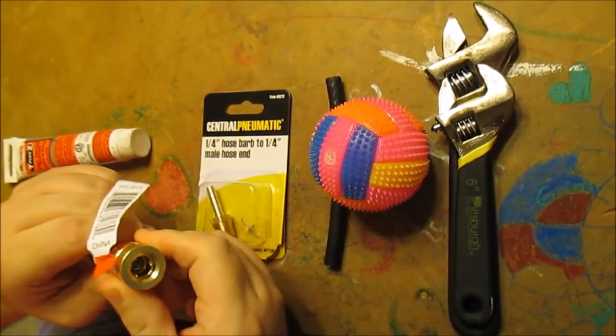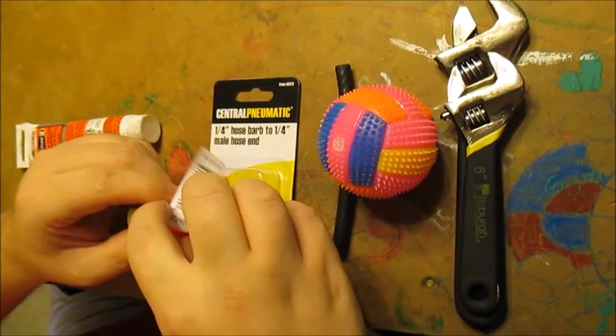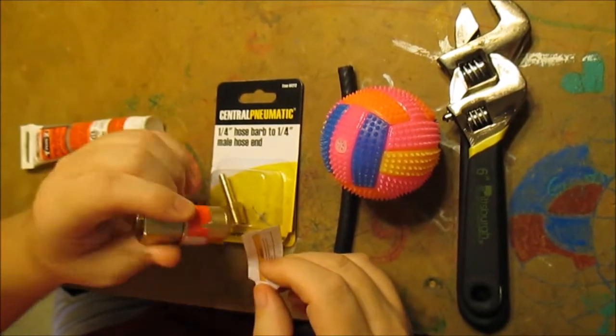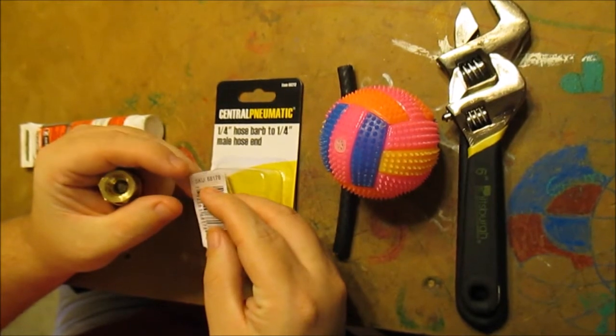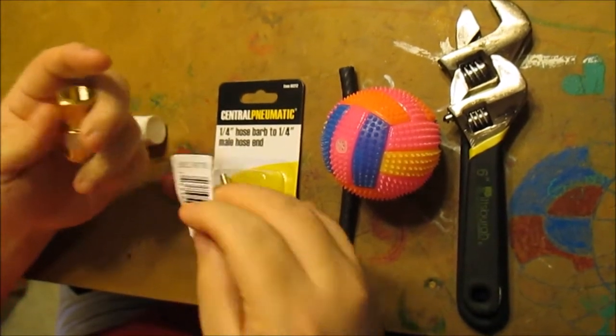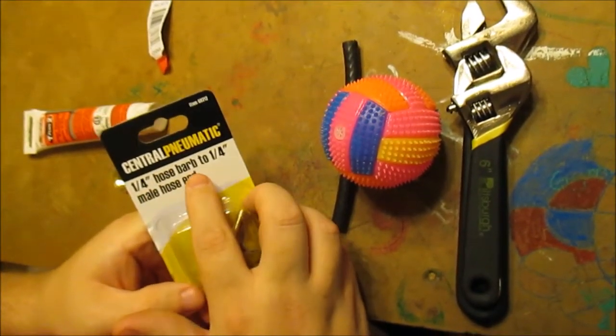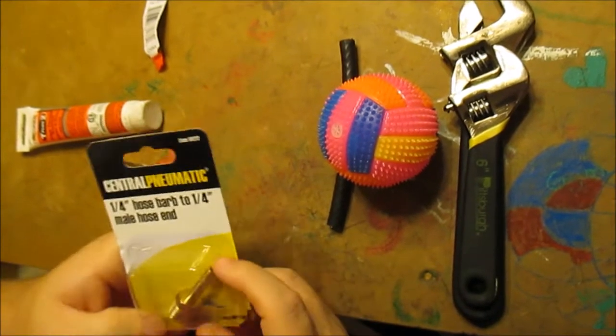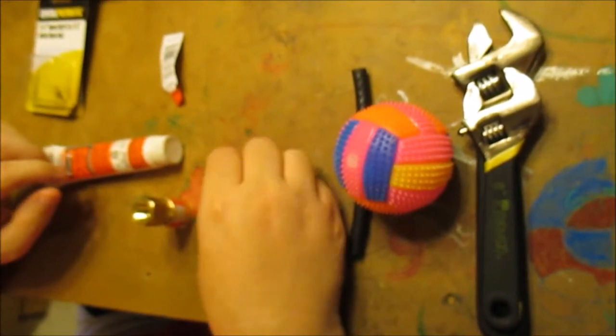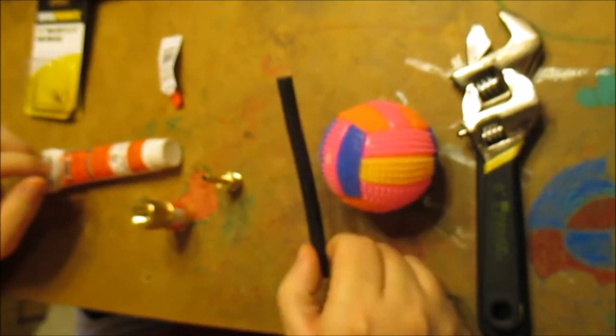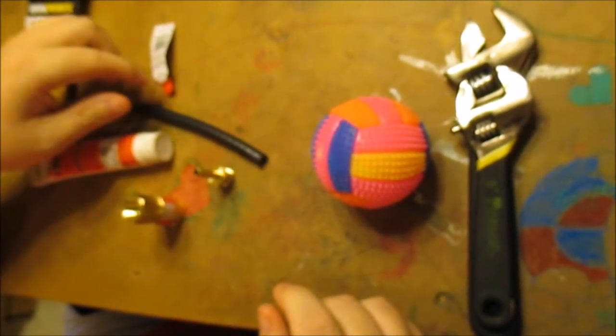I'll show you guys - this thing's falling off. I bought this at Harbor Freight for like two bucks maybe, SKU is 68178. And I bought this from Harbor Freight, this is a quarter inch hose barb to quarter inch male hose end. Also here I have a small piece of just rubber hose.